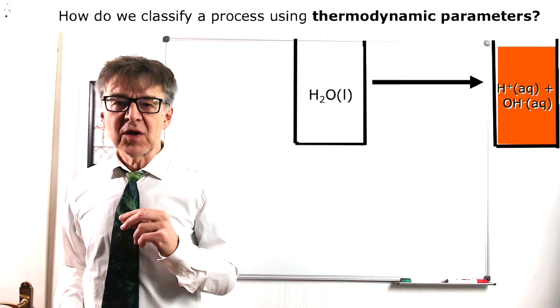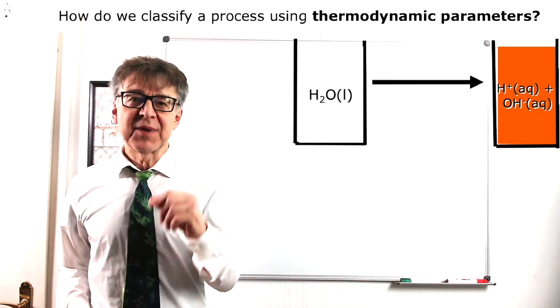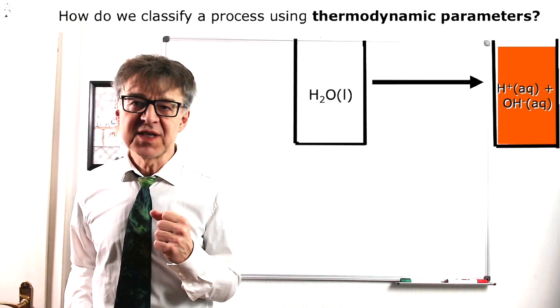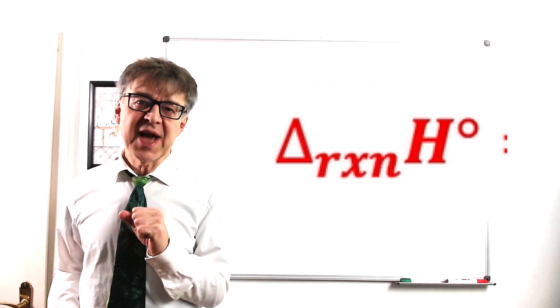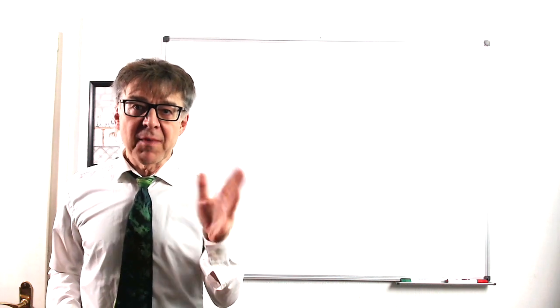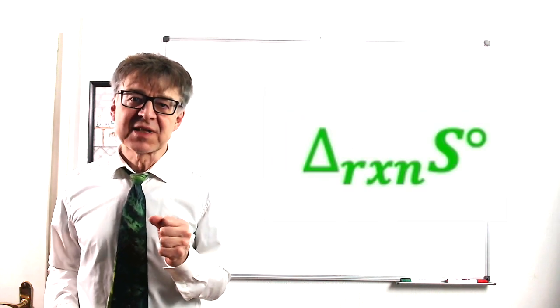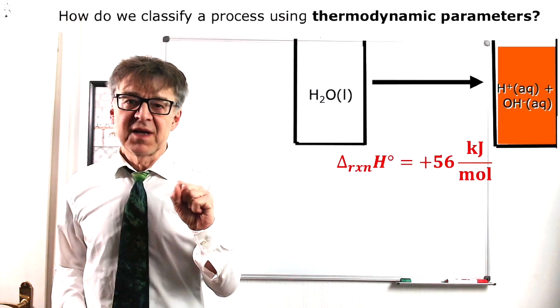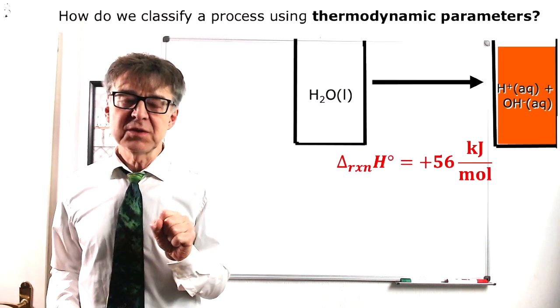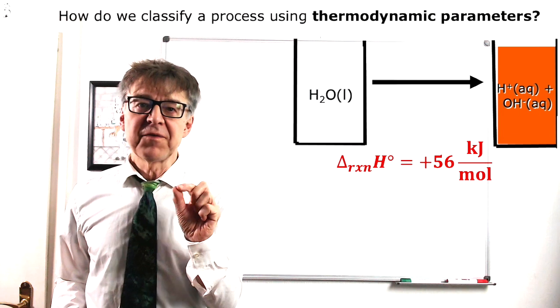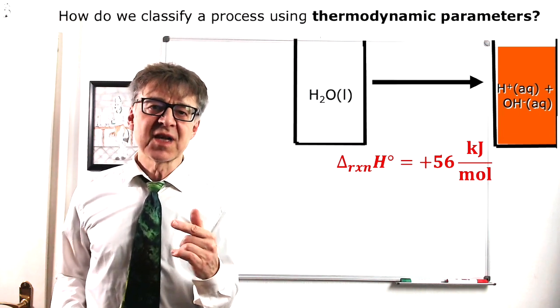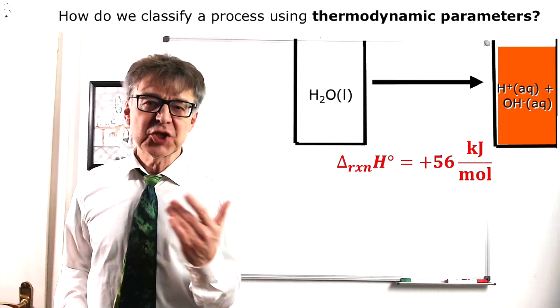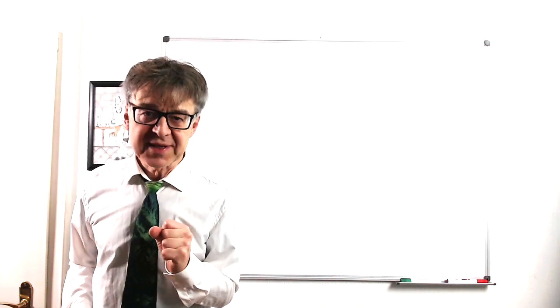We have discussed autoprotolysis of water thermodynamically. The three delta quantities you see here always compare the pure products to the pure reactants. They are marked by a standard symbol that looks like an exponent but it isn't. The standard entropy of reaction, delta H0 of 56 kJ per mole means the pure products are 56 kJ richer in energy than the pure reactant.